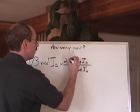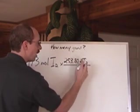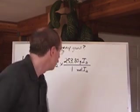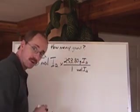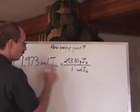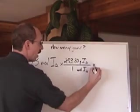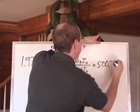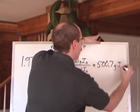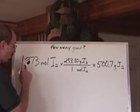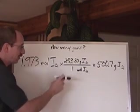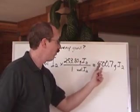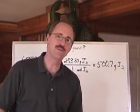There's 253.80 grams of I₂ every time you have one mole of I₂, because that is the molar mass doubled from what it is on the periodic table. So now moles cancel here. You're left with grams. And when you do the math here, you get 500.7 grams of I₂. One, two, three, four significant digits. Multiply or divide, keep the least number. 500.7. That's beautiful.